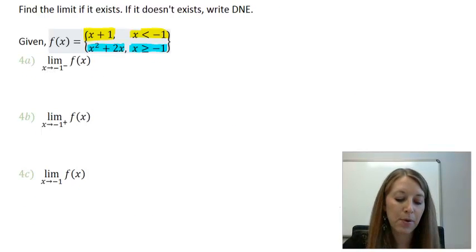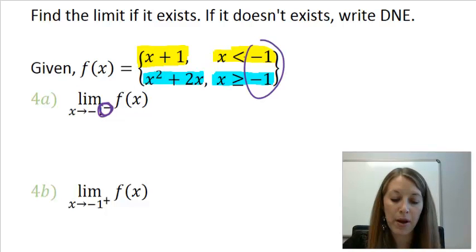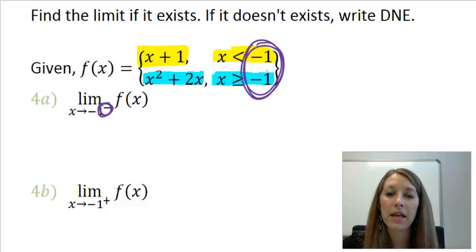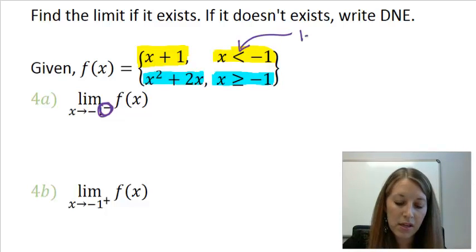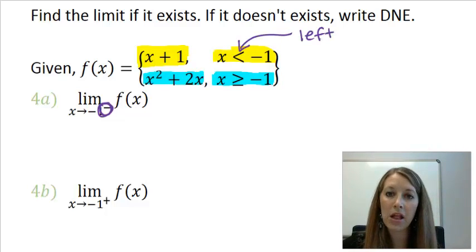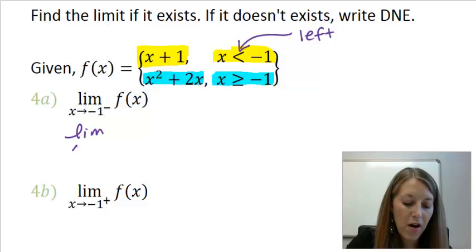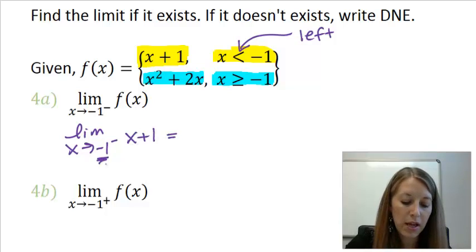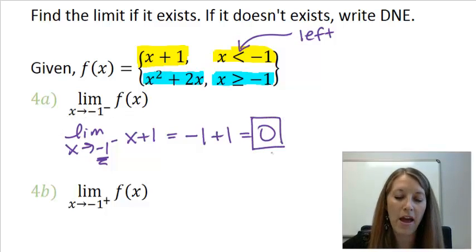For Part A, x is approaching negative 1 from the left. Negative 1 is what separates the two intervals. The left-hand side corresponds to the smaller interval, so I plug into the yellow piece. The yellow function is x plus 1. Substituting x equals negative 1 gives me negative 1 plus 1, which equals 0. So the limit as x approaches negative 1 from the left is 0.